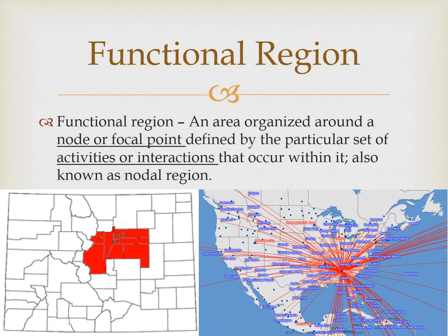That unifying characteristic could be a pattern of activity. For example, there's a certain level of activity surrounding a grocery store — people typically drive to their closest one. The level of activity is very strong immediately surrounding the store; however, as you get further away from one store and closer to another, the level of activity becomes less consistent. What I just described exhibits the spatial concept of distance decay: as distance from the node increases, interaction decreases.